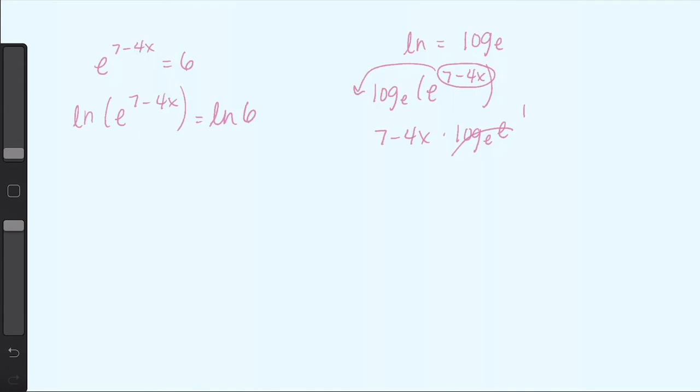So by taking the natural log of both sides, we get rid of this e value and the 7 minus 4x comes down. Then we still have natural log of 6 over here. Now it's just algebra to solve for x.